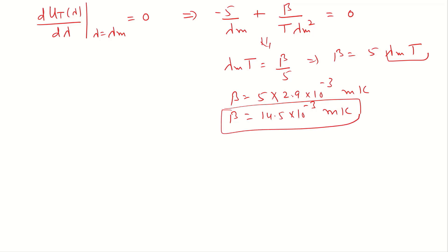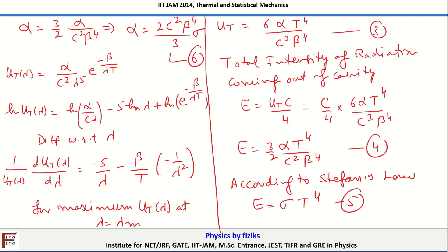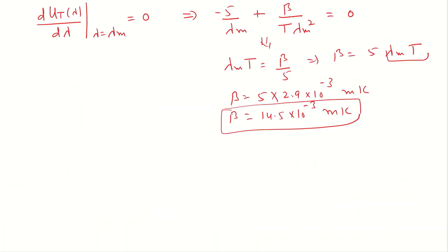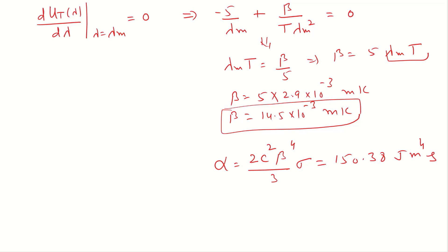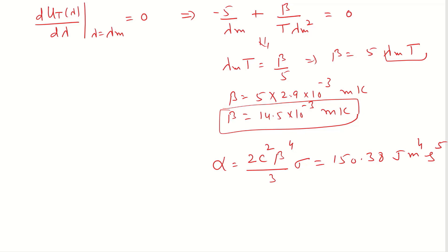Now that β is determined, α can be found by substituting into α = 2c²β⁴σ/3. Substituting the values of β and σ gives α ≈ 150.38 J·m⁴·s⁵. This completes the solution for finding the Wien's law constants α and β.